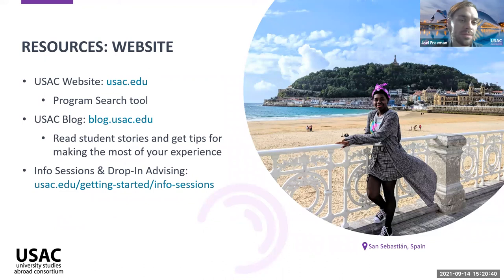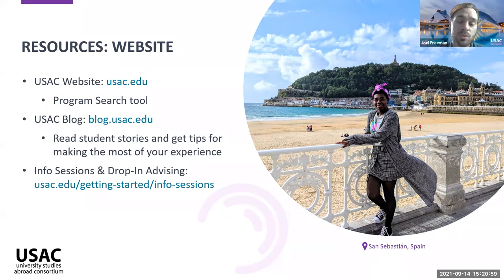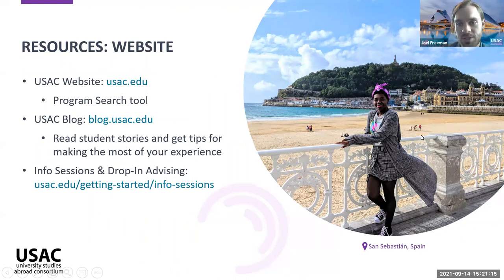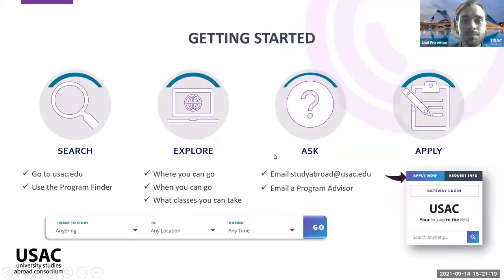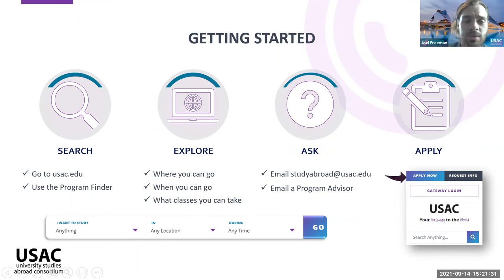Looking at some of those resources — obviously the best place to get any information is on our website, which is USAC.edu. We have a program search tool right on the front page where you'll be able to select what you'd like to study, when you'd like to study, and where you'd like to study to get a better idea of the programs out there for you. Our blog is a really great resource as well — a lot of posts are from alumni, giving you a clear idea of what studying abroad in a particular location looks like from a student perspective. We also have a lot of info sessions and drop-in advising available.